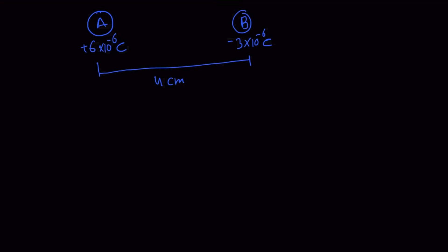In this problem, we have sphere A where the charge of sphere A is positive 6 micro coulombs, which is 6 multiplied by 10 to the power of minus 6 coulombs. Charge B is negative 3 micro coulombs, which is minus 3 multiplied by 10 to the power of minus 6 coulombs. They are located 4 centimeters apart, with B being 4 centimeters to the right of A.